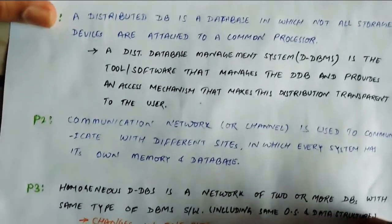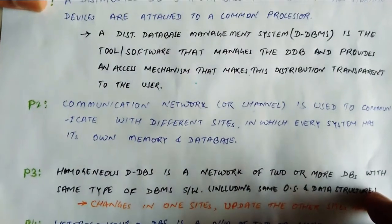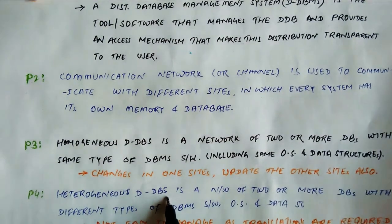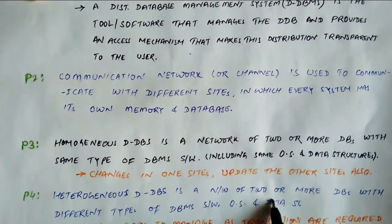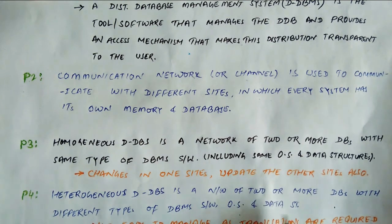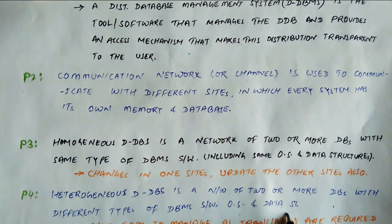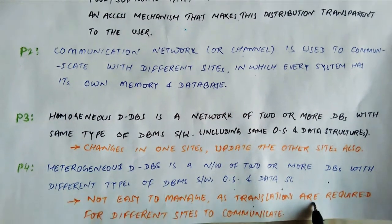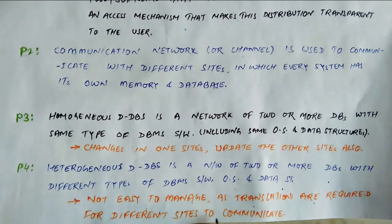The last point is the Heterogeneous Distributed System. A heterogeneous distributed database system is a network of two or more databases with different types of DBMS — like different software, operating systems, data structures, or processors. This system is not easy to manage, as translations are required for different sites to communicate.